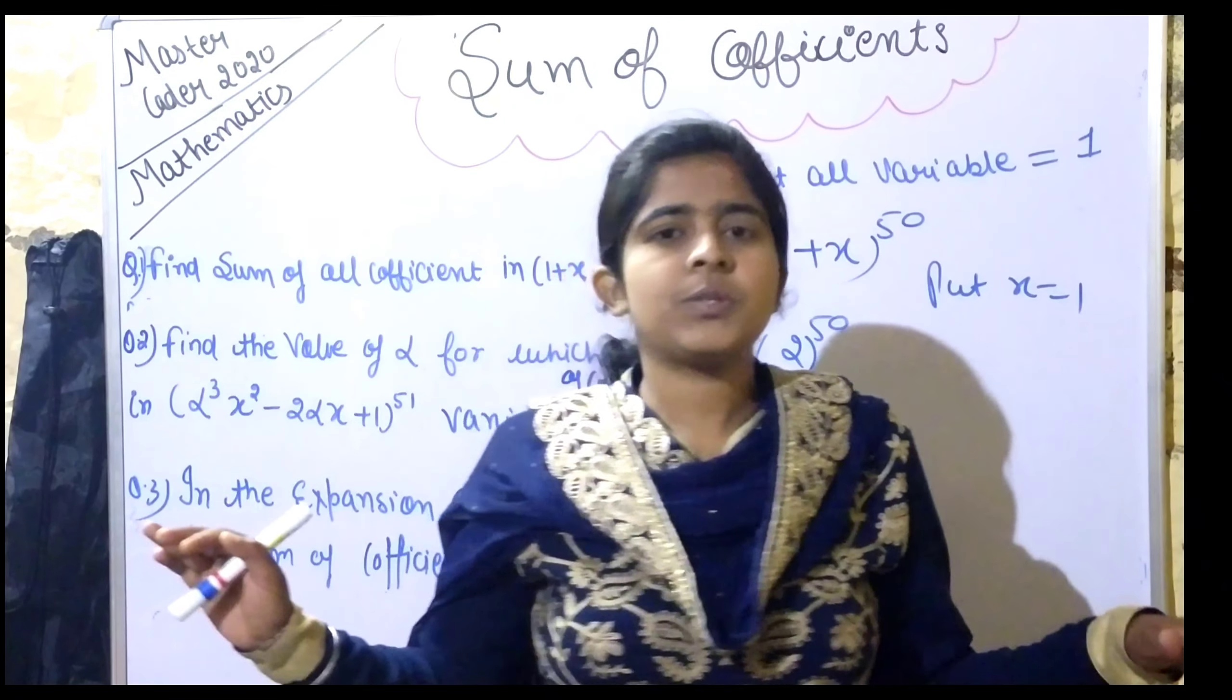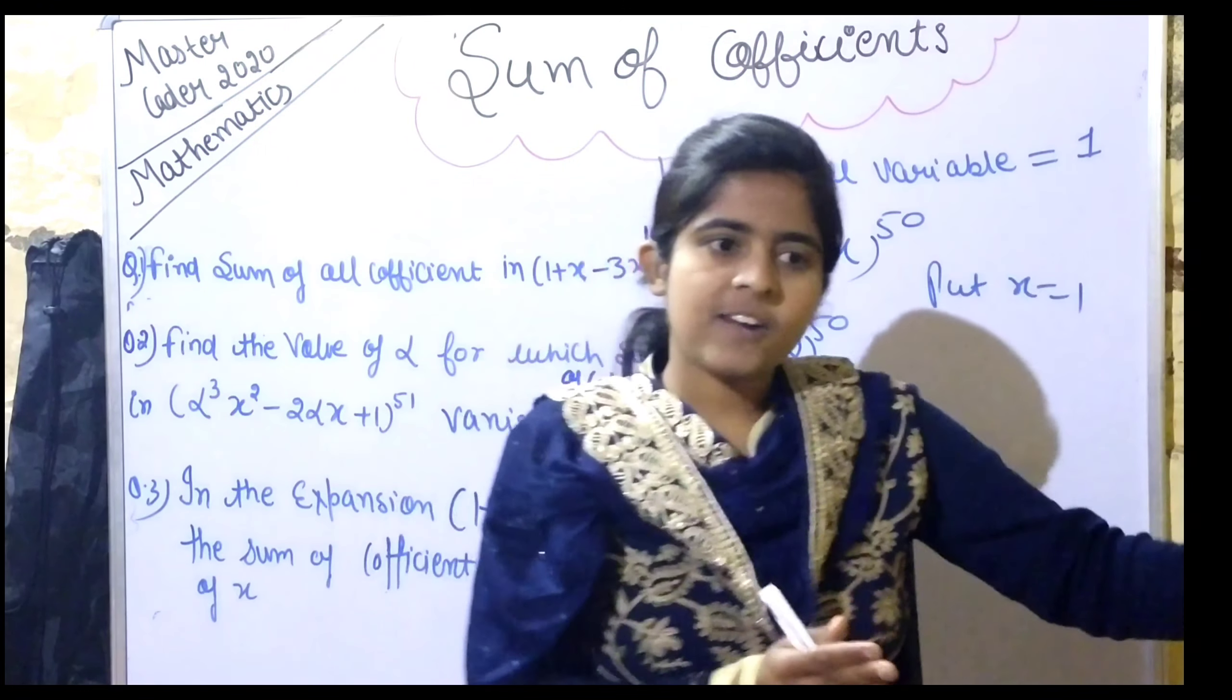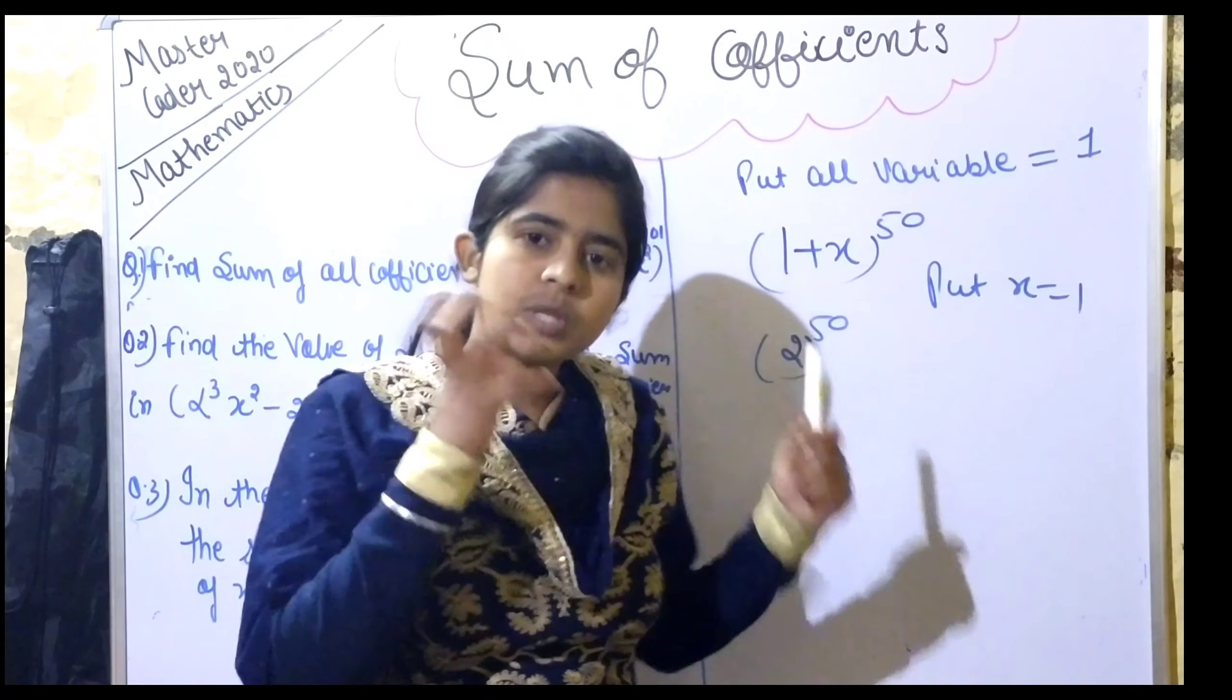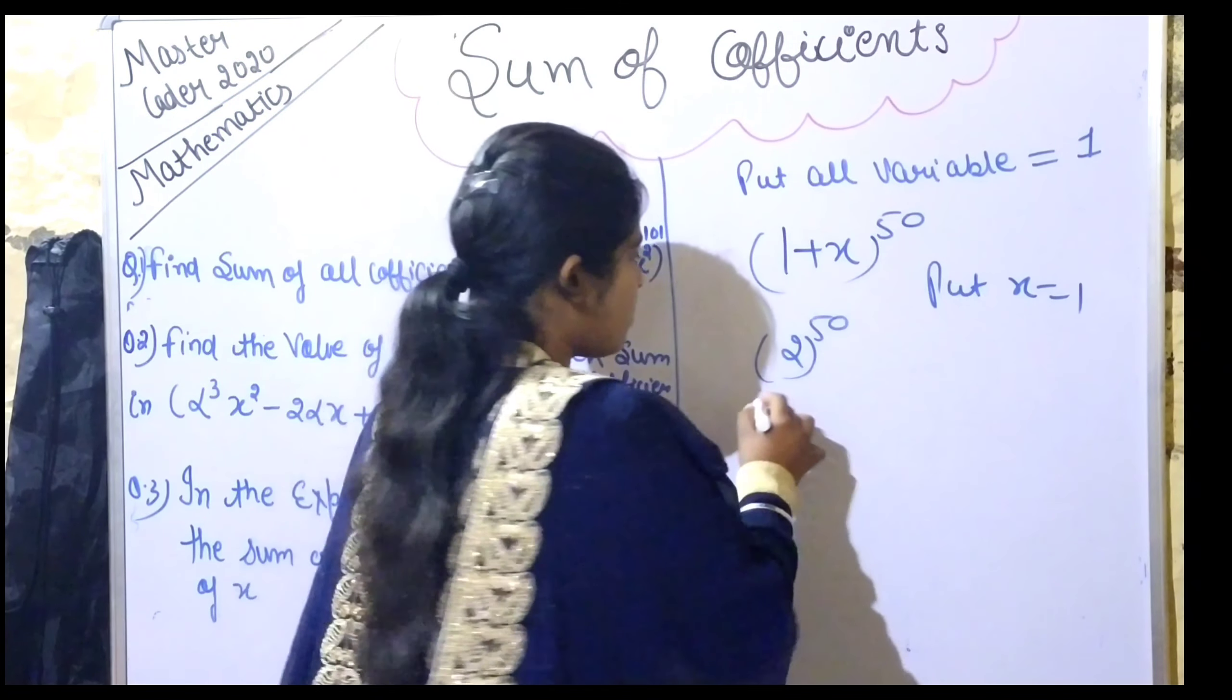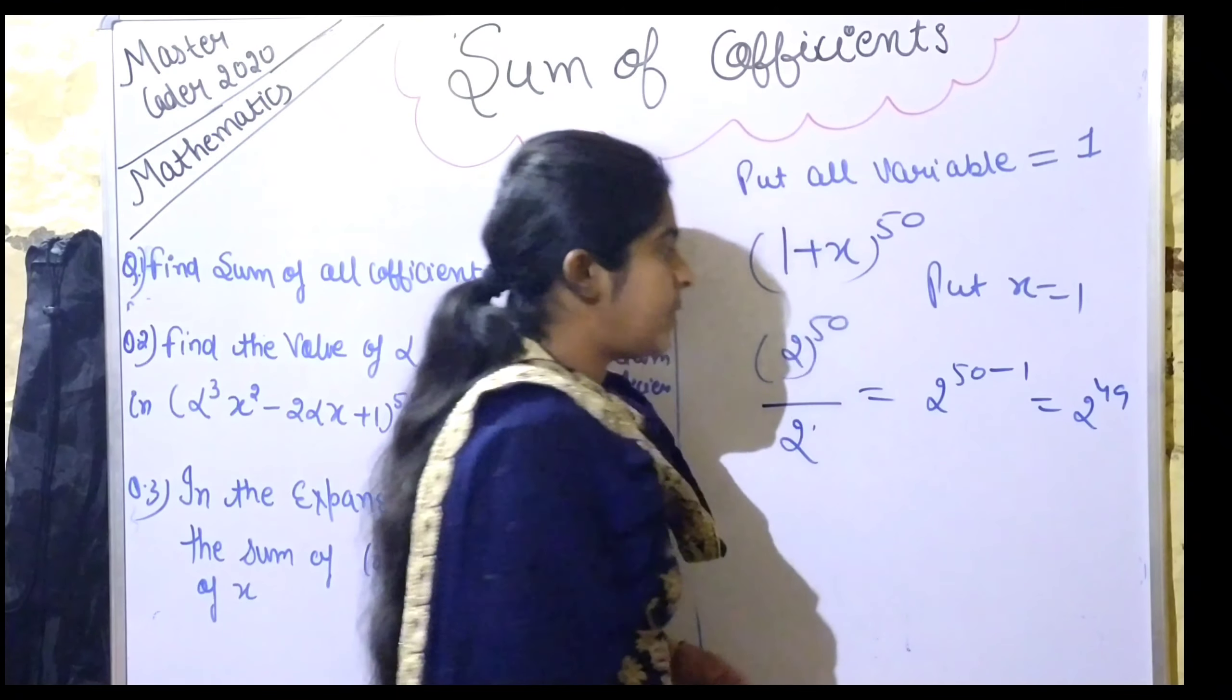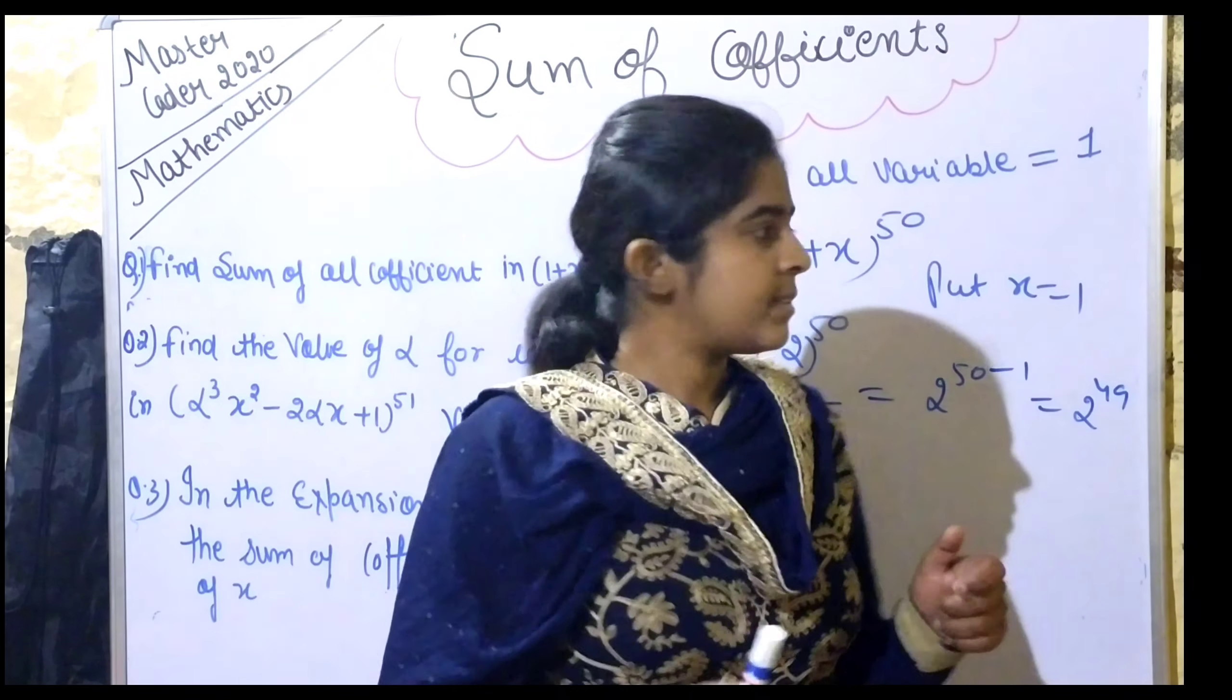Listen carefully: when we expand, there are terms with odd powers and terms with even powers of x. For example, half will have odd powers and half will have even powers. If I know the sum of all coefficients and want to find just the odd ones, half of the total would give me the answer for odd powers.